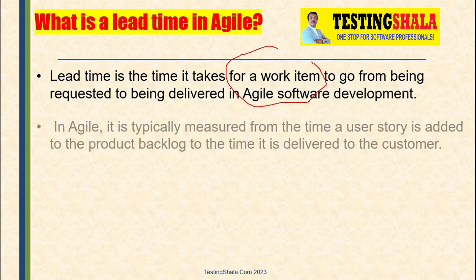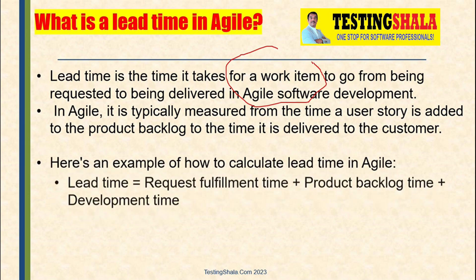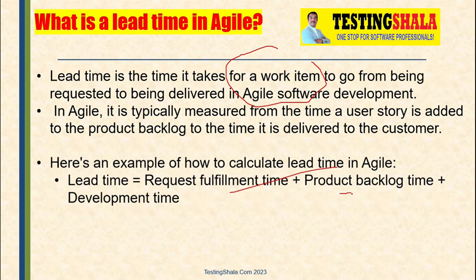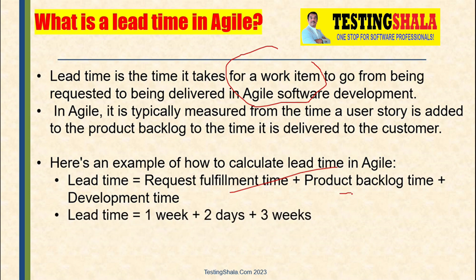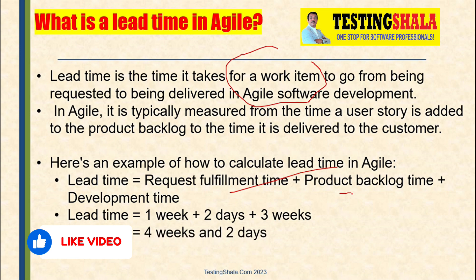Here is how we normally calculate lead time. The lead time starts from when a request is received from the customer and placed in the backlog, through backlog refinement, and then when the scrum team picks up and implements it. For example, requirement fulfillment is one week, product refinement is two days, and implementation is three weeks — so the overall lead time is four weeks and two days. That is the lead time for completing a given work item.